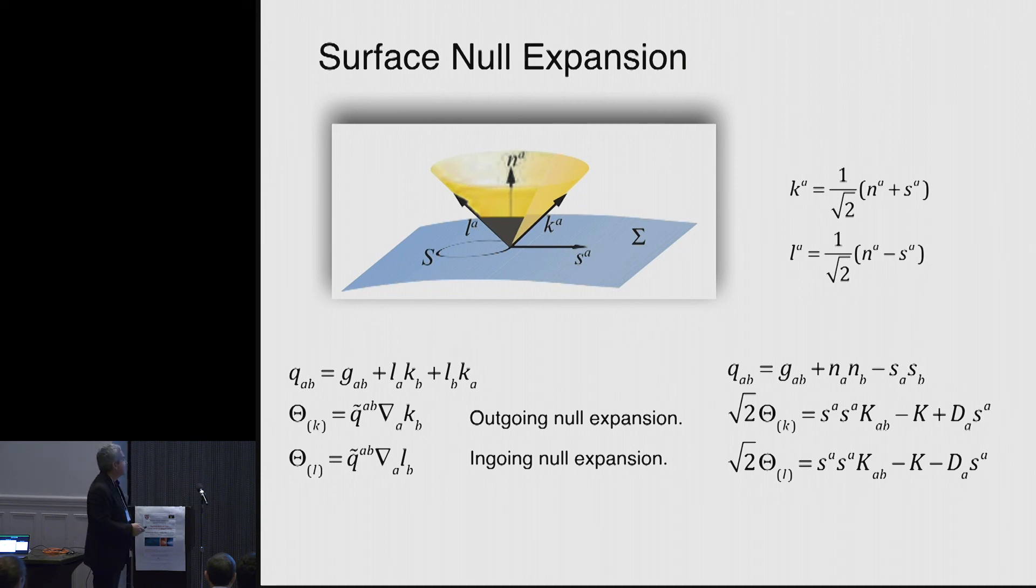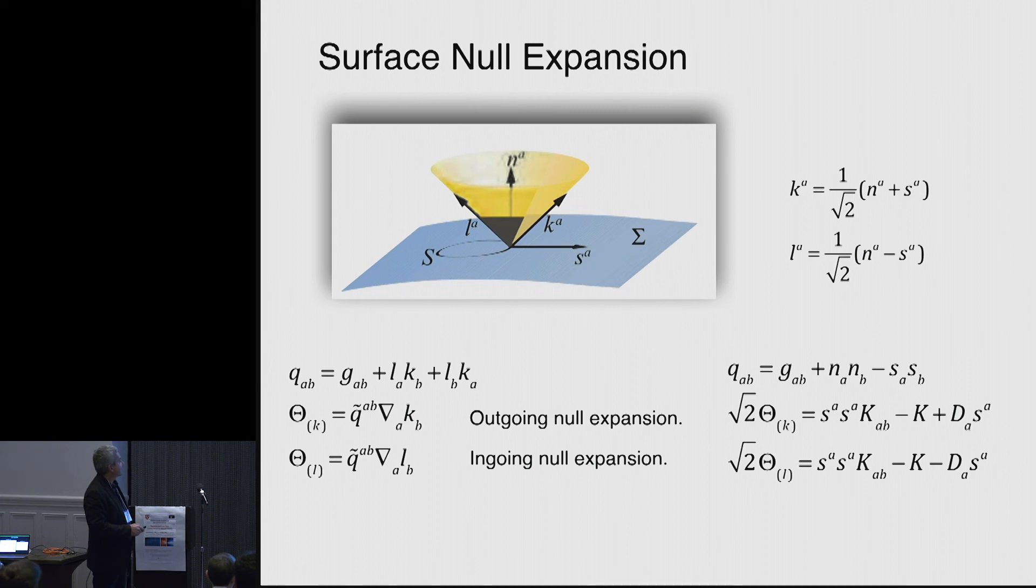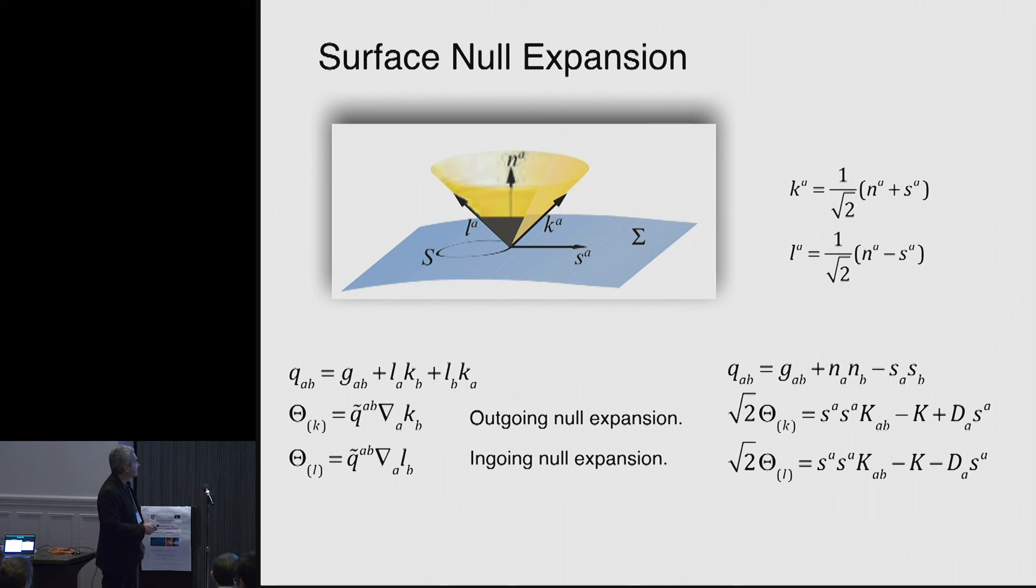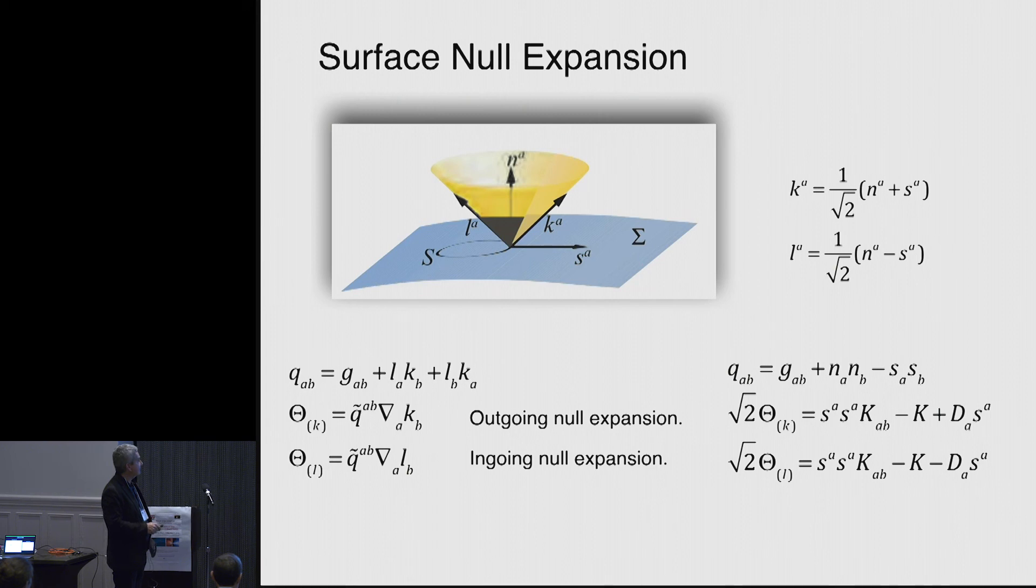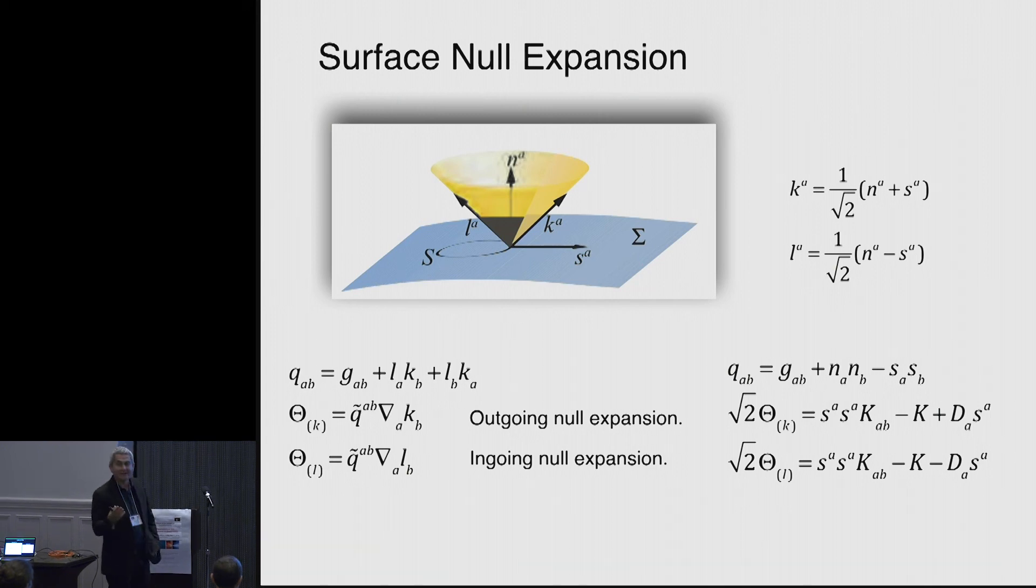So what we do is we calculate this expansion theta. And remember, so this is one of the slices. If you have a surface, you have an outgoing and in-going null direction. You can write that expansion not only in terms of those null directions, but also in quantities that you have at hand.